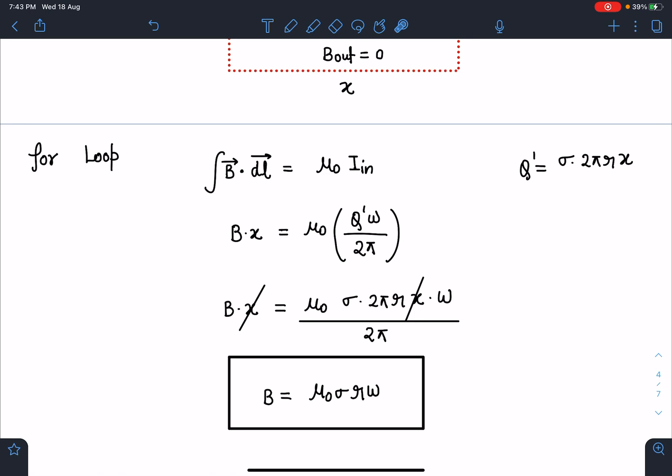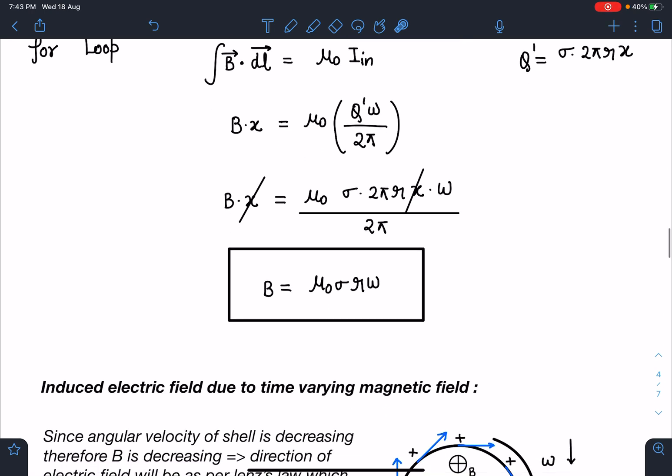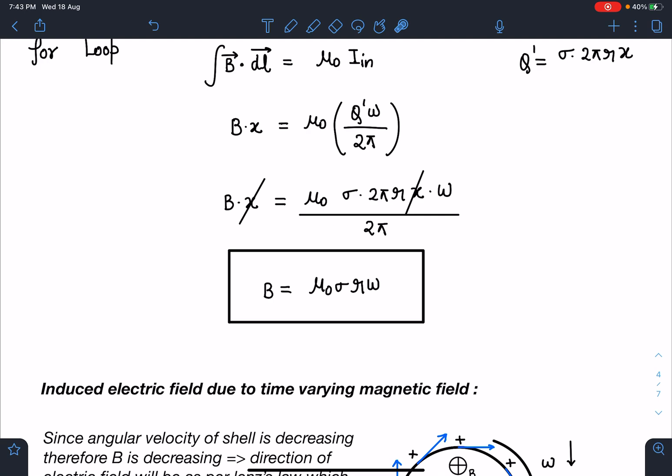Here q' value is going to be σ·2πr·x. When I substitute this value, I am getting B as μ₀σrω. This omega is at any given instant of time t. This is another mains level problem for finding B due to rotating charged cylinder, but together you can see the strength of the problem is increasing.